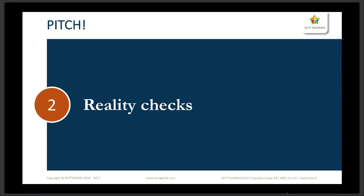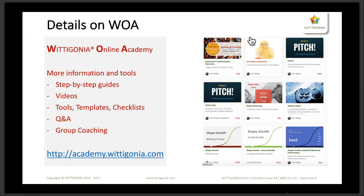The reality checks are explained in more detail in some of the courses. If you'd like step-by-step guides, videos, tools, templates, and formulas, that's all available in the class Pitch — which comes in English and German versions — and of course the Shape Growth classes. There's even a deep dive on software-as-a-service metrics and KPIs, so make sure to check it out.